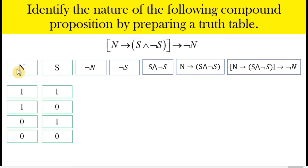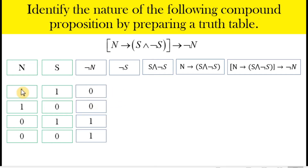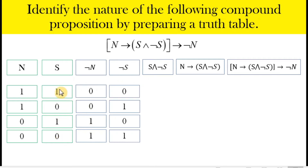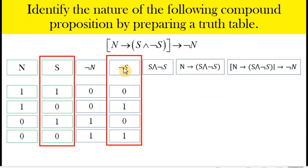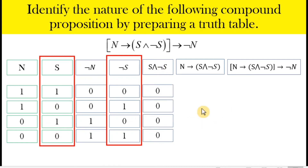For the first column, we identify the truth values of not n — the negation of proposition n — so we reverse the truth value: if it's true it becomes false, and if it's false the negation is true. Since n is one, one, zero, zero, its negation is zero, zero, one, one. Also, the negation of s — negating the s column — gives zero, one, zero, one. For the next column, which is a conjunction of not n and not s: a conjunction is only true if both simple propositions are true, and there is no instance where both are true, so the conjunction is always false — always zero.